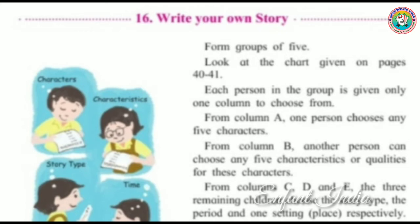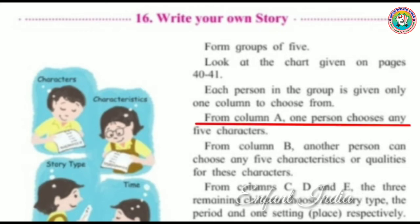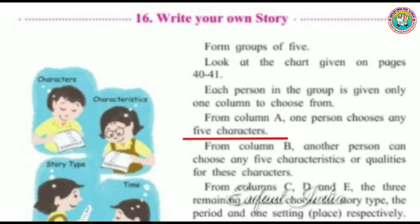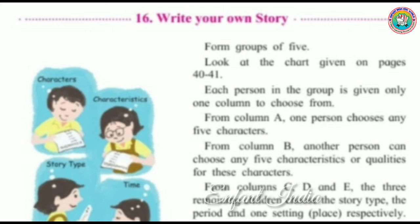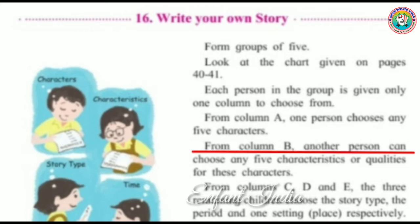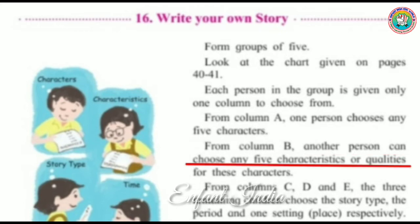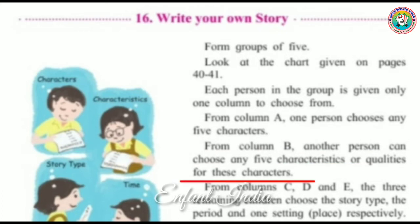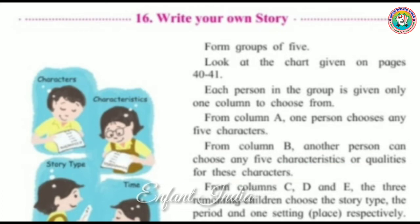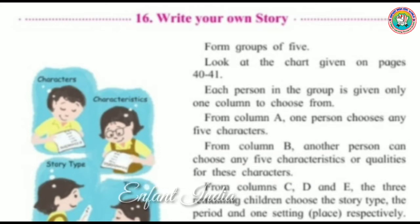From Column A, one person chooses any 5 characters or qualities for those characters. For Column B, another person also chooses 5 characters or qualities.